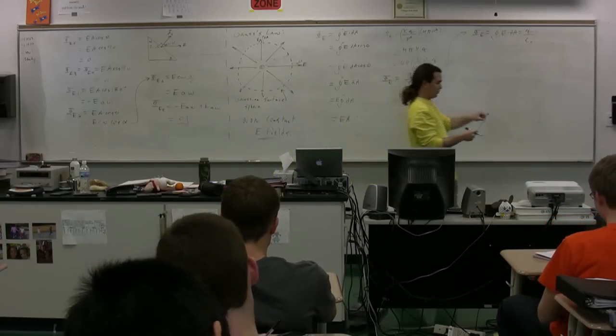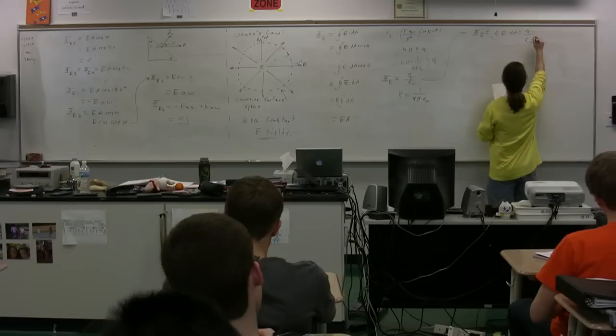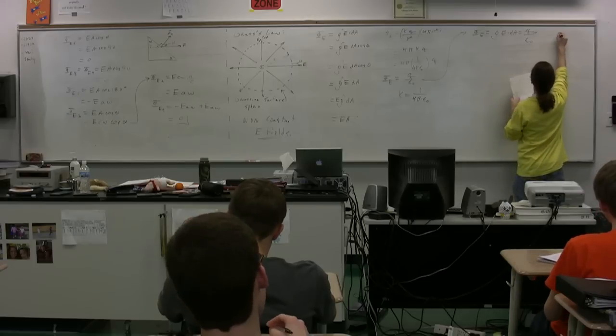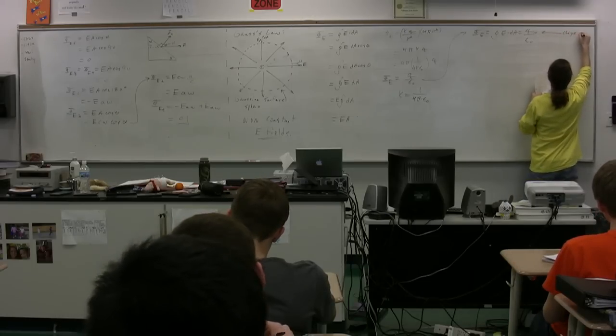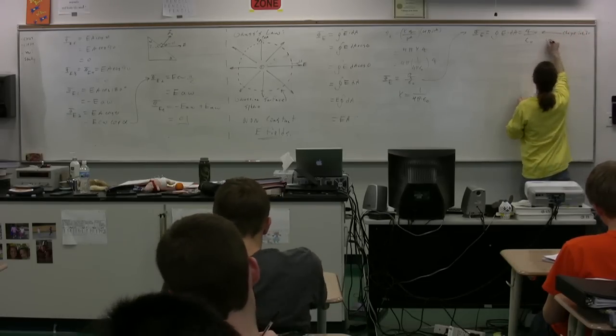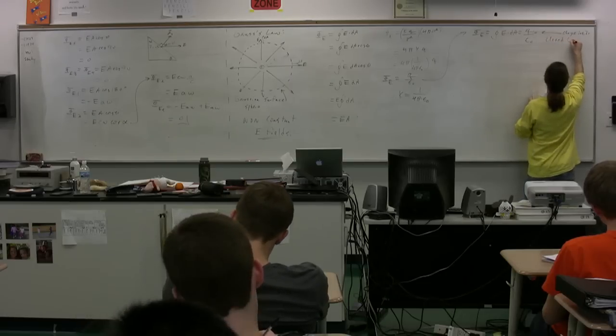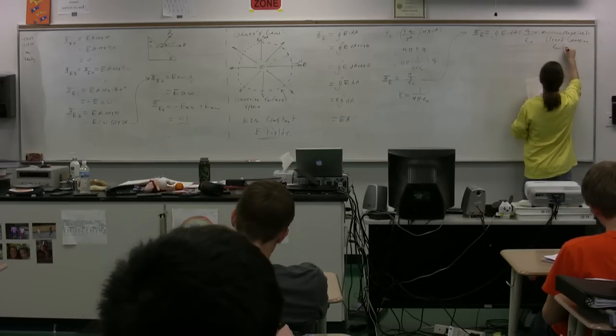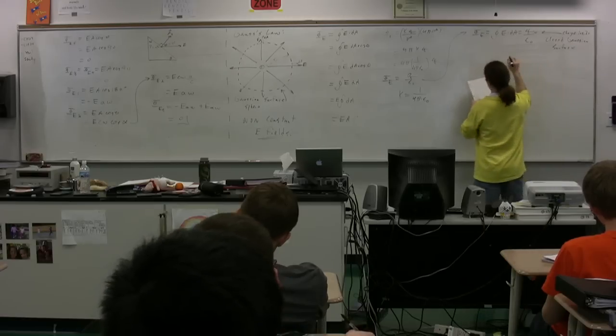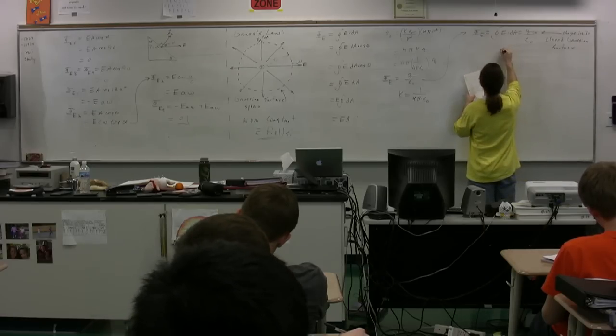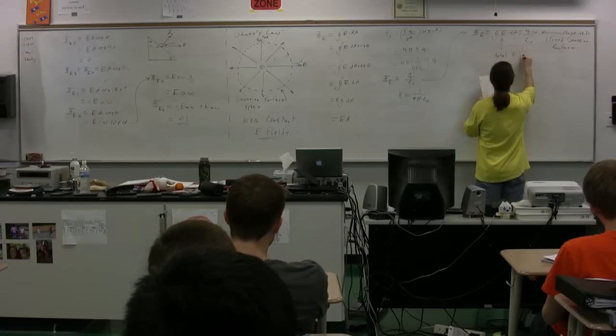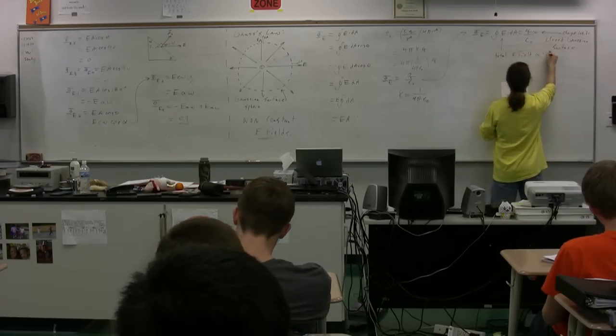Or, the electric flux, which equals the closed surface integral of E dot dA, is equal to Q divided by epsilon-naught. Specifically, this is the charge inside the closed Gaussian surface, and this is the total electric field at the Gaussian surface.